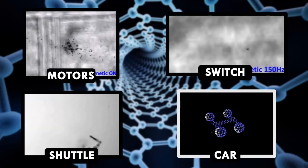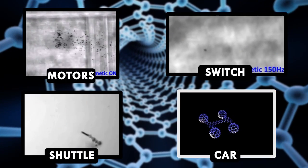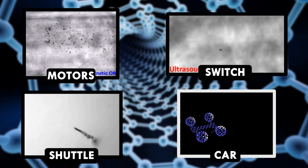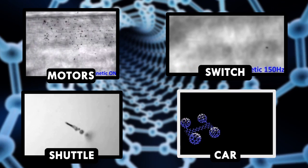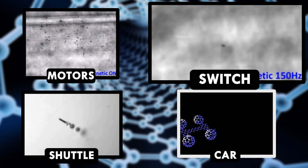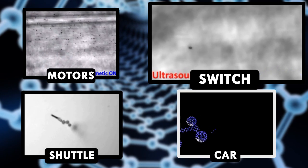So far, scientists have created molecular motors, switches, shuttles, turnstiles, and even nanocars. Let's start off with the smallest building block, molecular switches. Here's Dan Klase from the University of Nebraska.